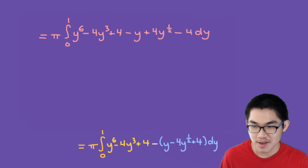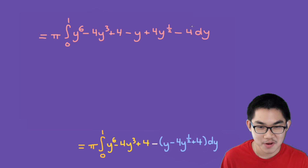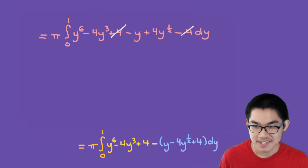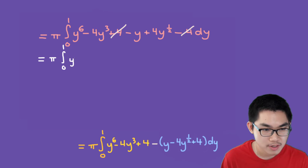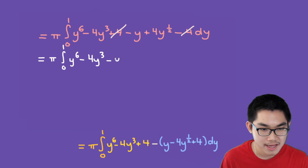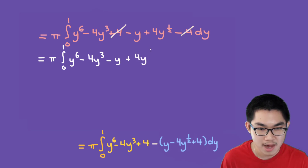So putting it all together, we have π times the integral from 0 to 1 of (y⁶ minus 4y³ plus 4) minus (y minus 4y^(1/2) plus 4) dy. And if you look here, the 4 minus 4 will cancel, giving us π times the integral from 0 to 1 of y⁶ minus 4y³ minus y plus 4y^(1/2) dy.